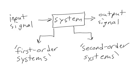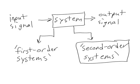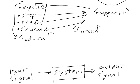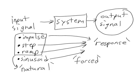In our last videos, we focused on the responses of first order systems. In this video, we're going to take a look at second order systems. And once again, we're going to focus on the natural response rather than the forced response. The natural response is the response to an impulse, or a step, or a ramp, while the forced response is the output that corresponds to a sinusoidal input. So today we'll be looking at the step response of a second order system.